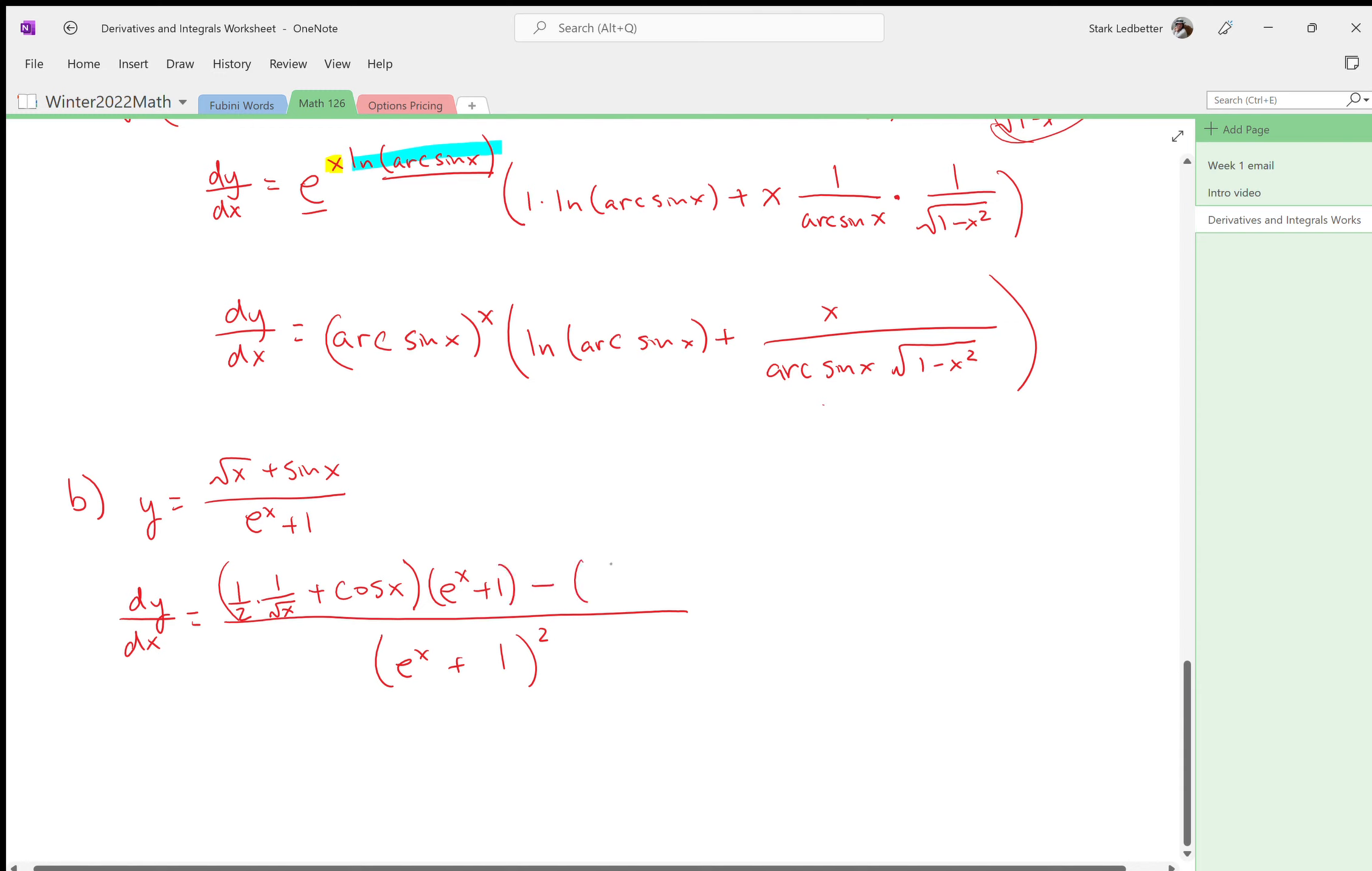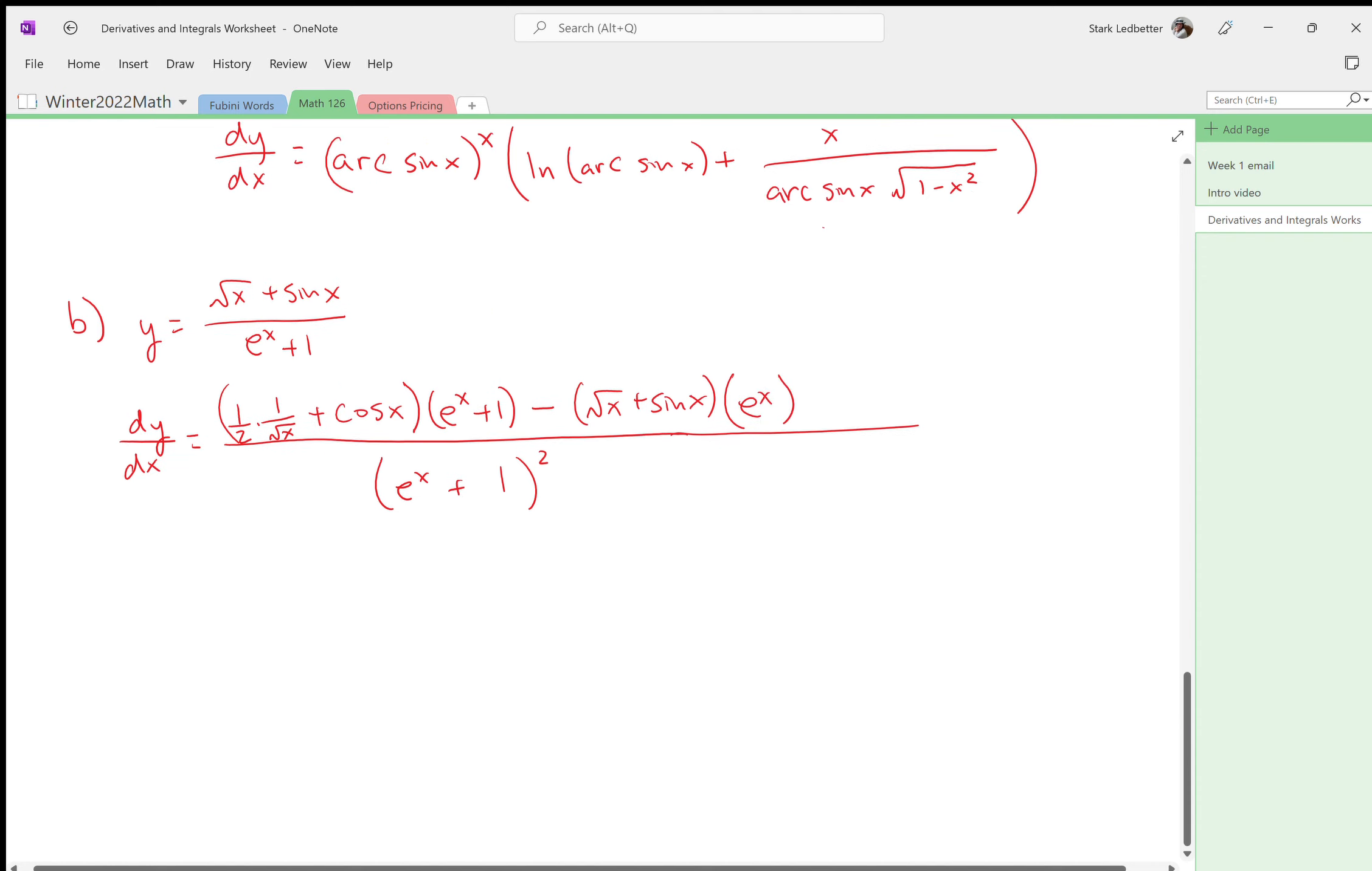Plus derivative of sine x is cosine x, times the bottom. Don't touch the bottom. Okay, minus the top. I don't like that high d low, whatever you guys do. Derivative of the top times the bottom minus the top times derivative of the bottom. You can use the high d low if it works for you. Derivative of the bottom: e to the x, plus derivative of one is zero.